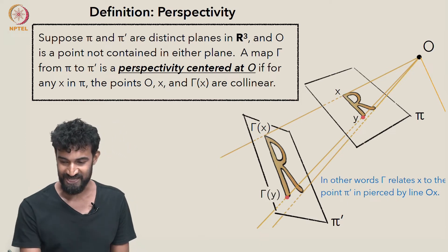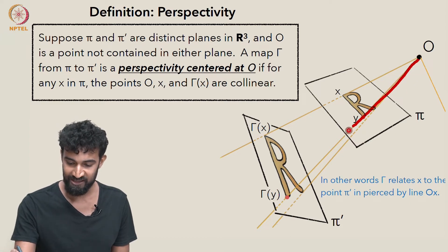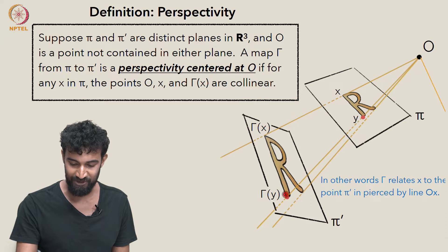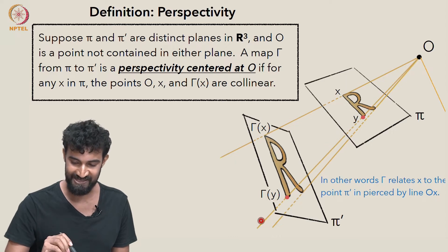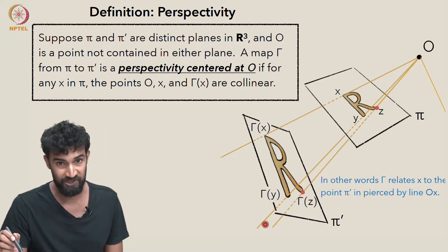To see another example, y is another point in π, and the line Oy hits π' at γ(y). So γ is relating y to this point here, pierced by Oy. And similarly, z is here, and γ(z) is here. And O, z, and γ(z) are collinear.